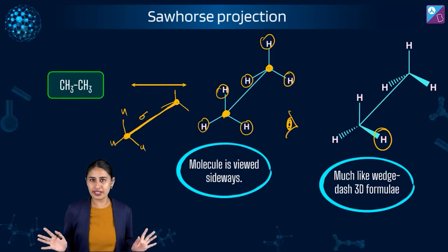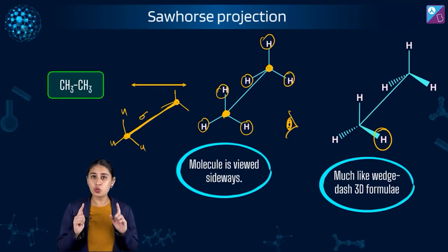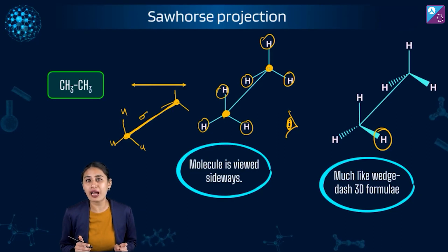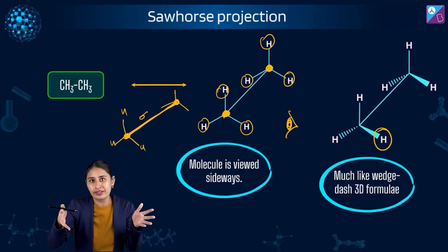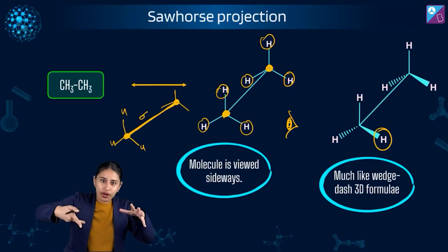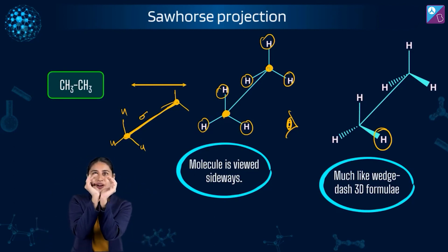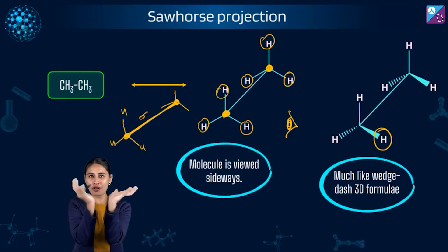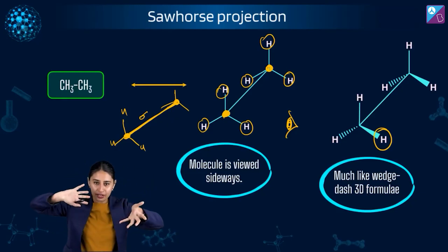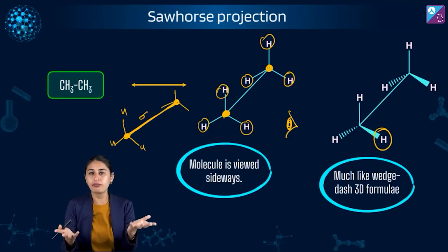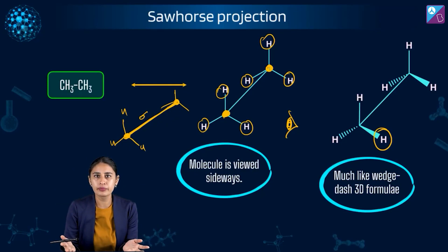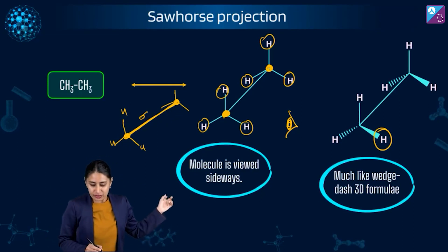Since the electronic distribution around the sigma bond is symmetrical, rotation would not affect it at all. This is not the case with a pi bond. In a pi bond, it's a restricted bond — you can't just go about rotation. In a pi bond, there is sidewise overlap, and if you rotate, that's a blunder.